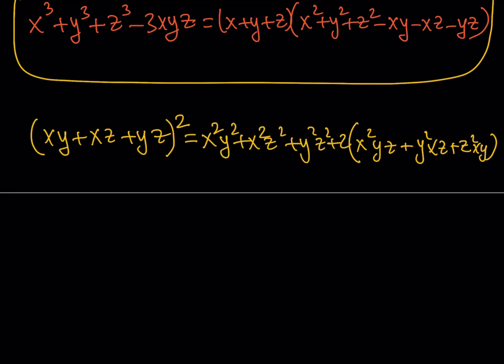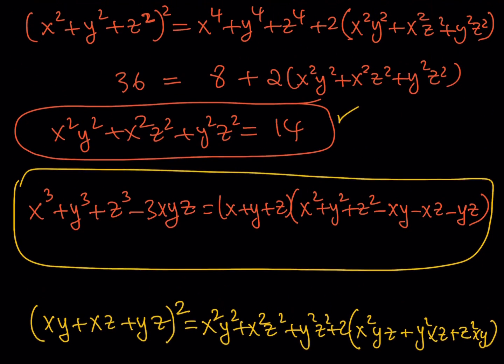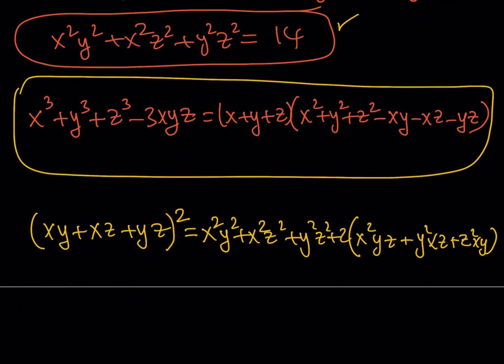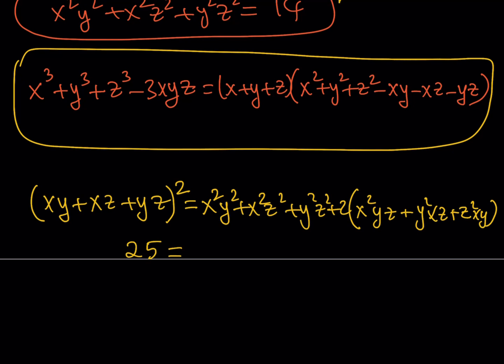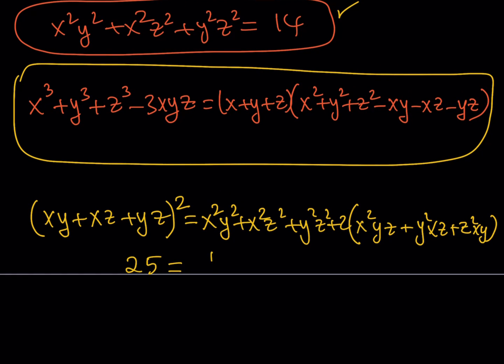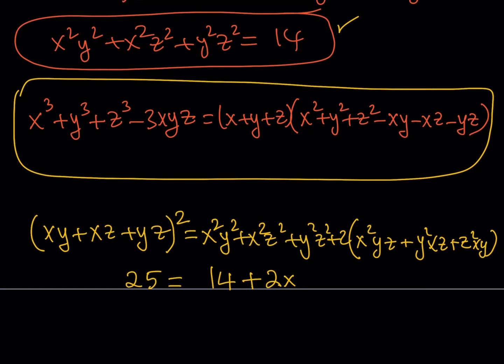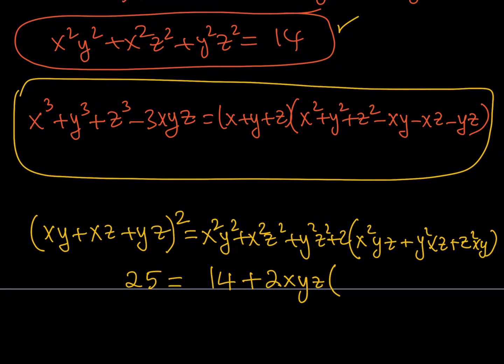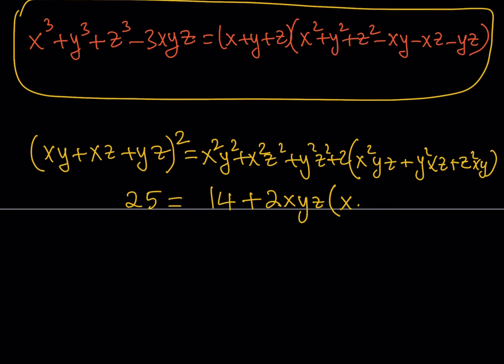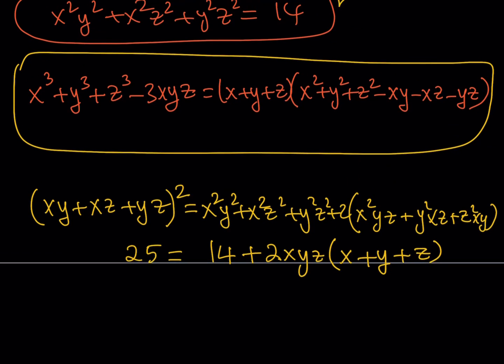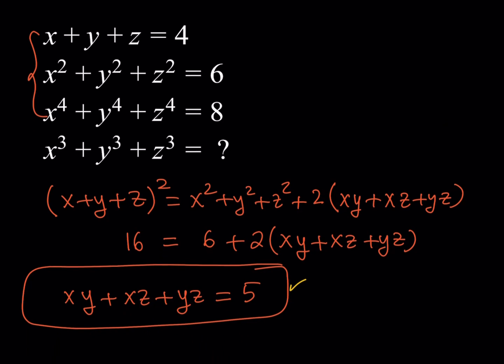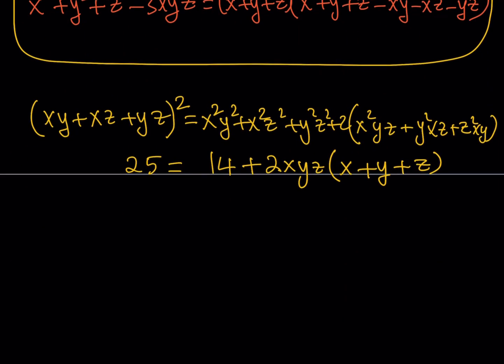Now xy plus xz plus yz is equal to 5, so 5 squared is equal to 25. This is 25. And we do know this as well, this is 14. Now what can I do here? Well I have a common factor which is xyz, so I can go ahead and pull it out. If I do pull it out something nice happens because inside the parentheses you should just be getting x plus y plus z. Isn't that beautiful? Everything falls into place. So we do know that x plus y plus z is equal to 4. So this is 4. And so that's going to give me 8 times something.